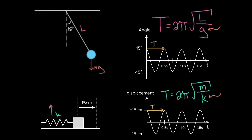Maybe the biggest difference is that the numerator for the mass on a spring depends on mass, but mass is nowhere to be found in the period formula for a pendulum. The period of a pendulum does not depend on mass. A really big heavy person on a swing and a very light child on the same swing will take the exact same amount of time to complete a full cycle. Mass does not factor into the period of a pendulum, but it does for the mass on a spring. A bigger mass on a spring gives more inertia, making the system more sluggish and slower, so it takes more time to complete a full cycle.